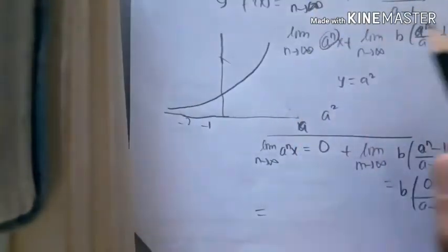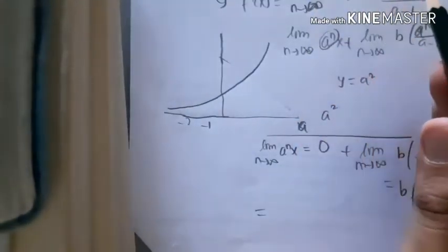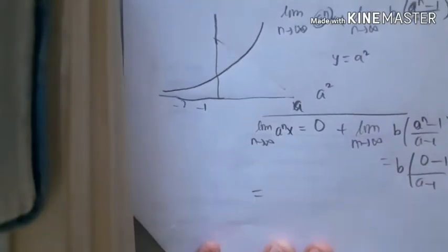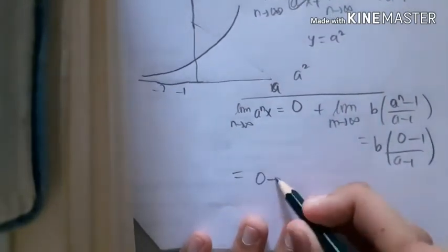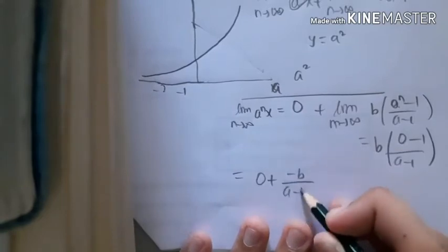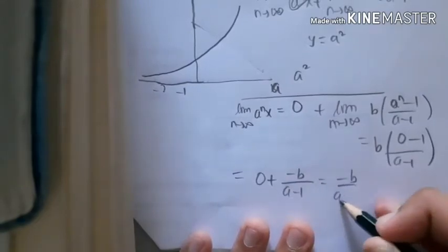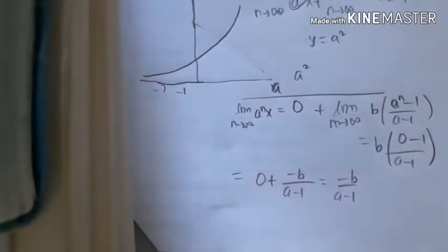So this equation a^(nx) + b(a^n - 1)/(a - 1) is zero plus (-b)/(a - 1), which equals -b/(a - 1). So that is, my friends, the limit as n→∞ of f^n(x), and we express it in terms of a, b, x. Well, you might wonder where is the x.